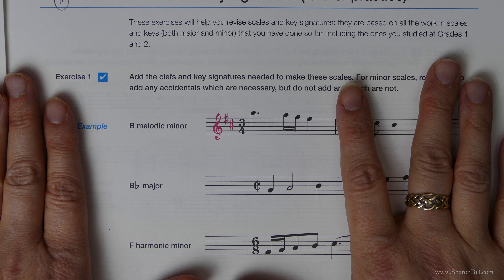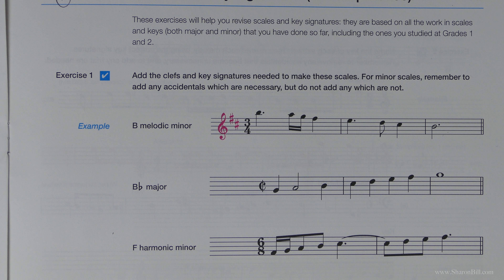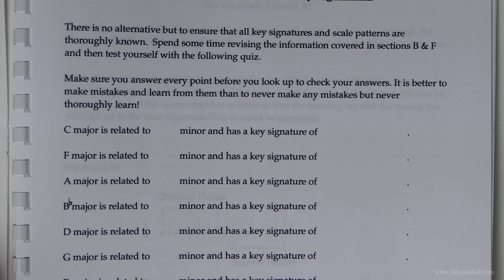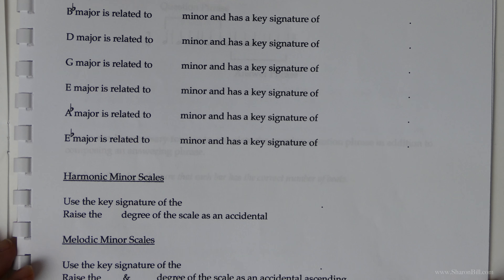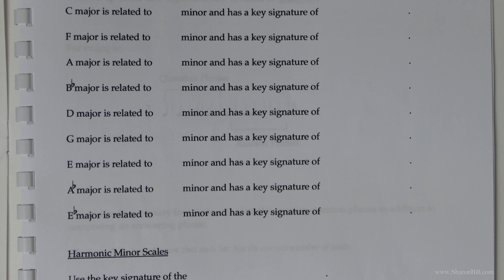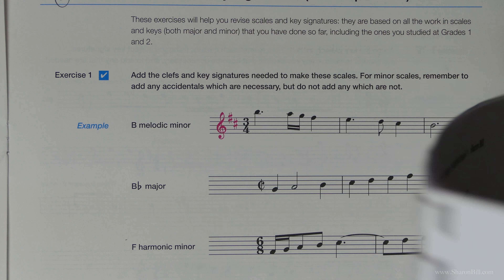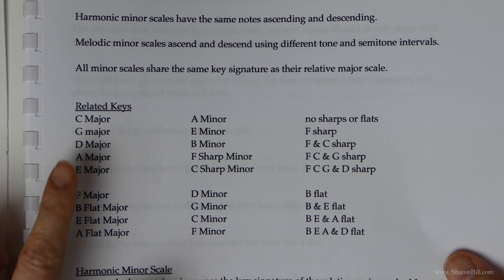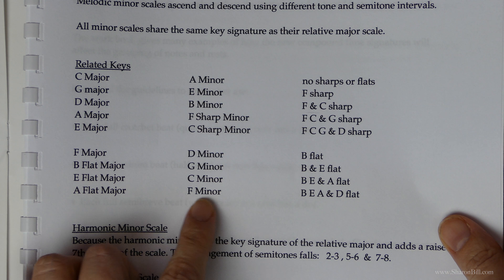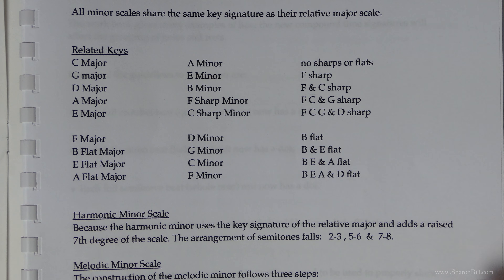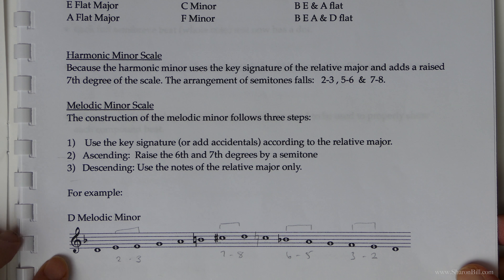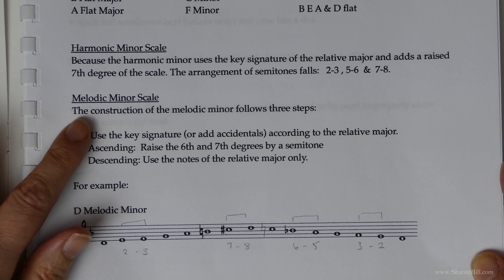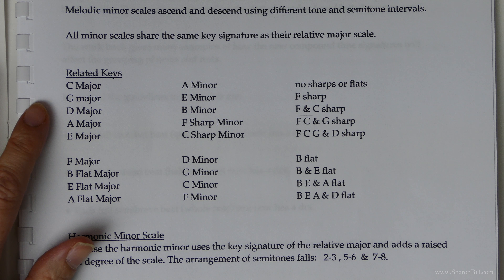Before you attempt this section you may want to turn to your PDF document section H — I've given you a little test sheet to help with your revision to make sure you're becoming quite familiar with these keys. The information you need to answer those questions is found a little bit further back in sheet F, where you can find all of the related major and minor key signatures and a revision on the steps to create the harmonic minor and the melodic minor scale. So everything you need to know is on sheet F.